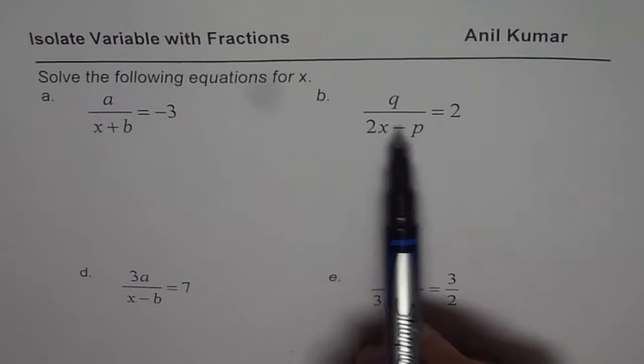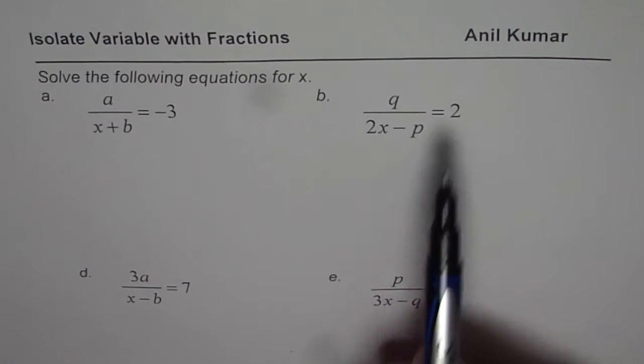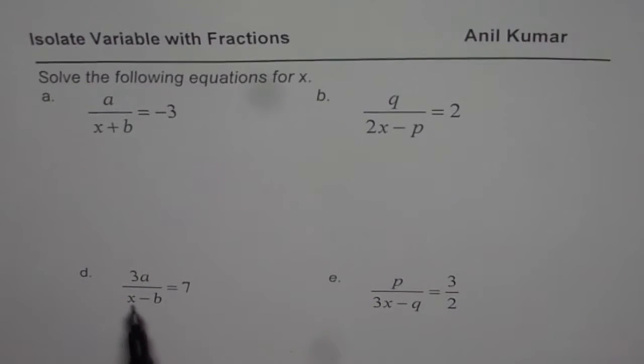Second is q over 2x minus p equals 2. Then we have 3a divided by x minus b equals 7, and p divided by 3x minus q equals 3 over 2. You can actually pause the video, answer, and then look into my solution at this stage also.